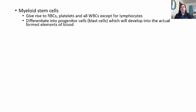Myeloid stem cells give rise to red blood cells, platelets, and all white blood cells except lymphocytes. They differentiate into progenitor cells known as blast cells. Anytime you see the word 'blast' with a cell, it means it's a juvenile or young cell going through that transition toward becoming a formed element—whether a red blood cell, white blood cell, or platelet.